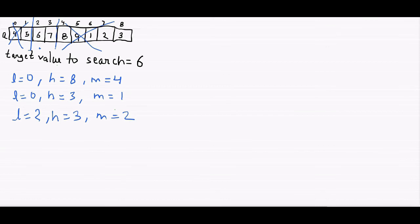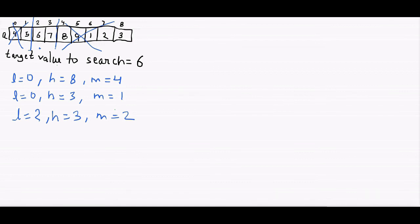The main idea is: find mid, then check whether to remove the right part or the left part. We use the property that in a sorted plus rotated array, when divided into two halves, at least one half will always be sorted. Once we find mid, we check if the left part or right part is sorted. If the left part is sorted, we check if the target belongs to it. If it does, we update high; if not, we update L to mid plus 1 and repeat the same process on the sub-array from mid plus 1 to high.